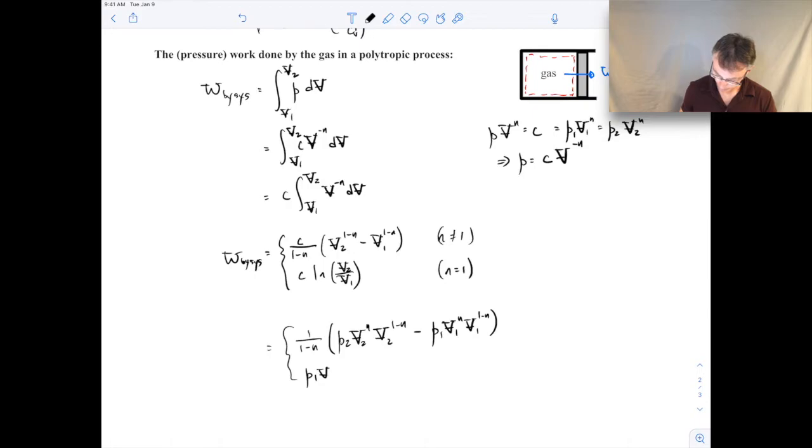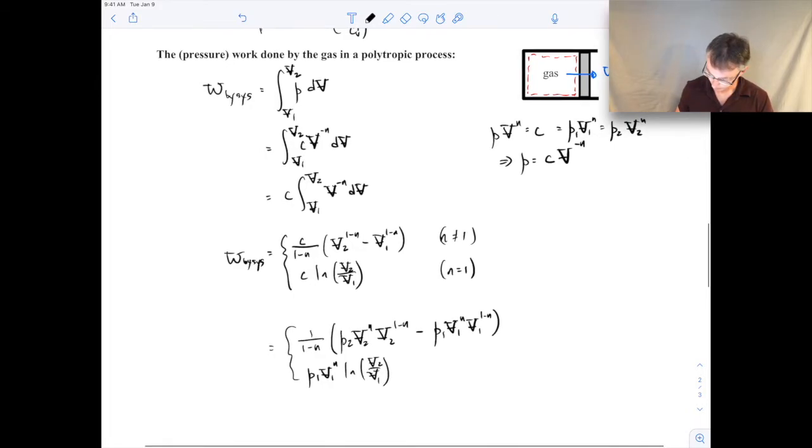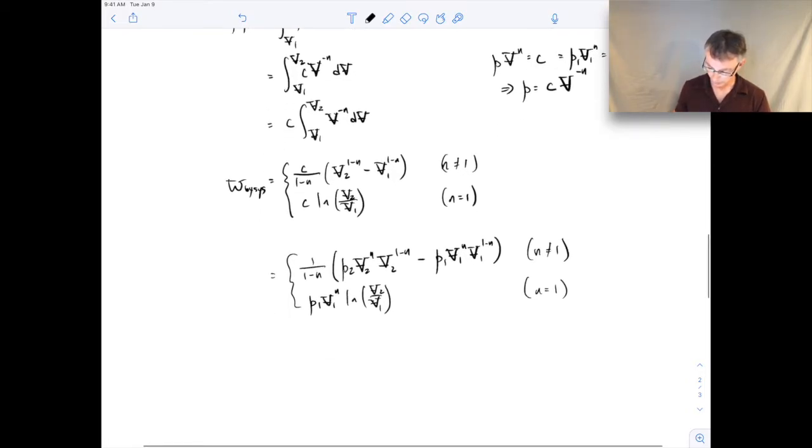I'll use P1 V1 raised to the N. Okay, and the reason I wanted to do that for the upper expression is because now you see we have V2 to the N, and that will cancel out with this V2 to the minus N term. Same sort of thing here with V1 to the N, V1 to the minus N there. So then when we expand that out, we're going to get the following. This will be P2 V2 minus P1 V1 all over 1 minus N.